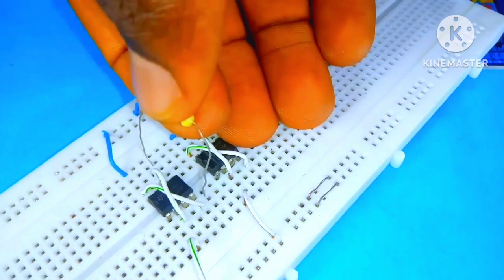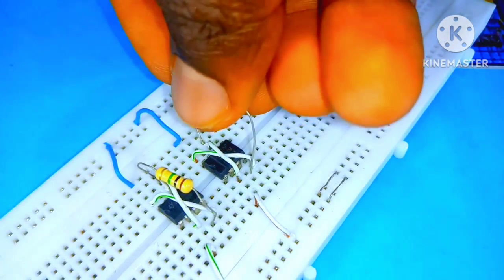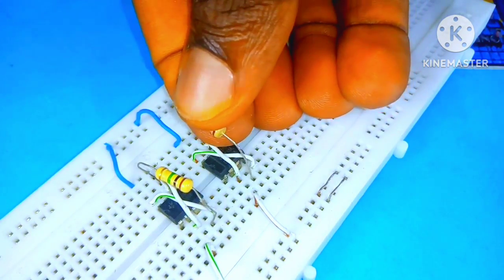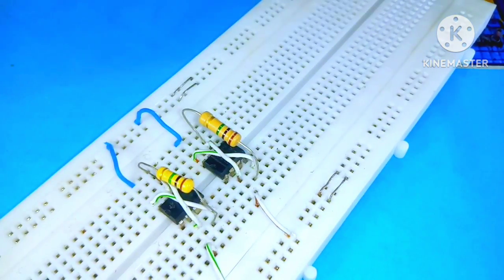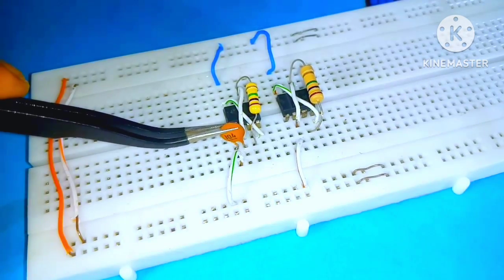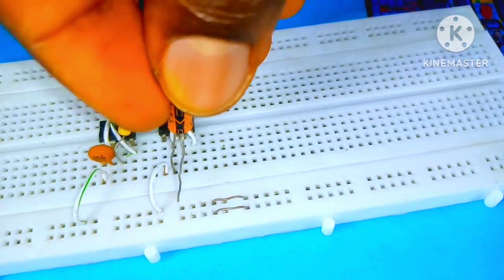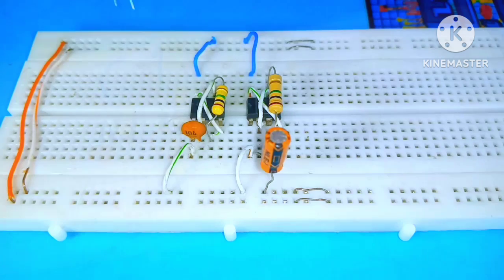I placed a 1 megaohm resistor between pin 3, the output pin, and pin 6. And also placed a 100 nanofarad capacitor between pin 1 and pin 2 and a 1 microfarad capacitor between pin 2 and the ground rail.